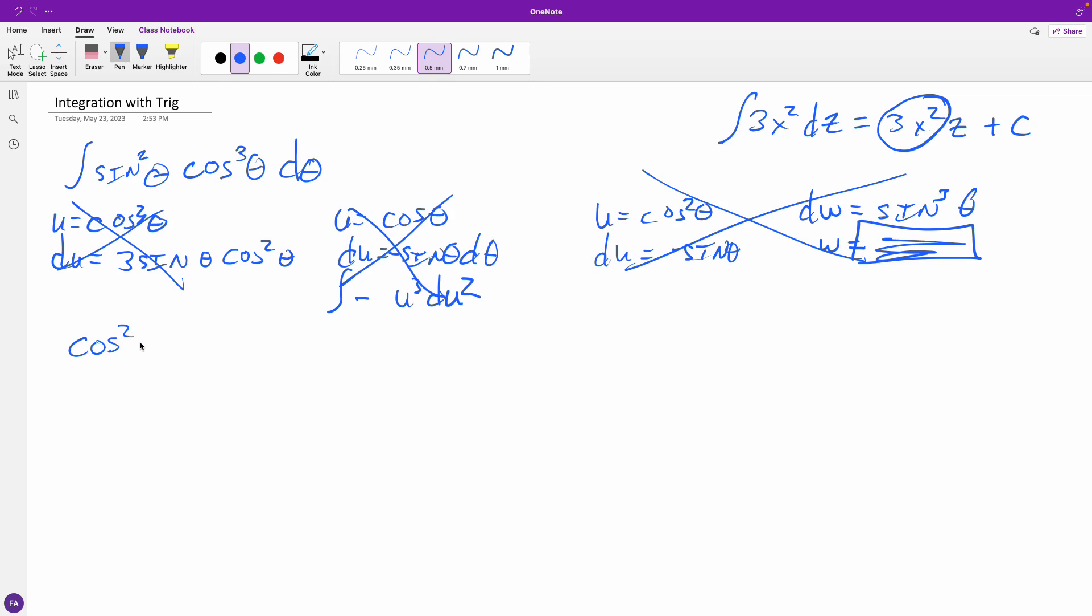One thing I do remember is this. This is one of our Pythagorean identities. Cosine squared plus sine squared equals one, and I can rewrite that. It might be a little bit more useful to us than this form.